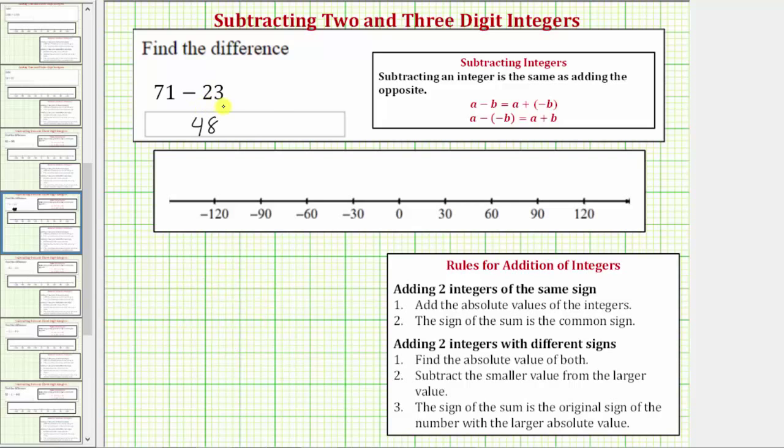We can write a difference as a sum because subtracting an integer is the same as adding the opposite. So because minus b is the same as plus negative b, we can write minus 23 as plus negative 23. So 71 minus 23 is equal to 71 plus negative 23. And before we look at the rules for adding integers, we should be able to recognize that the positive 71 is going to outweigh the negative 23, and therefore the sum will be positive, which we already know is 48.